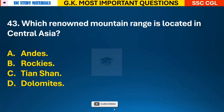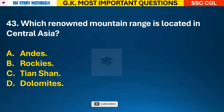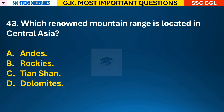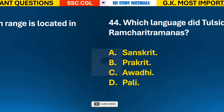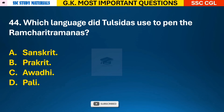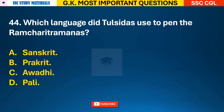Question 43: Which renowned mountain range is located in Central Asia? Answer C - Tian Shan. Question 44: Which language did Tulsidas use to pen the Ramcharitmanas? Answer C - the language was Awadhi.